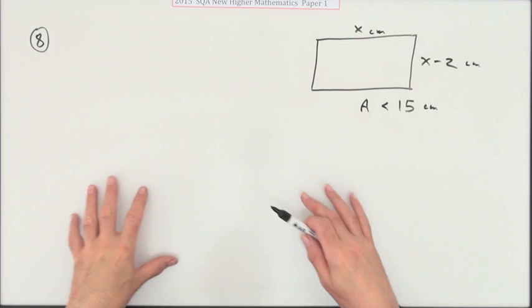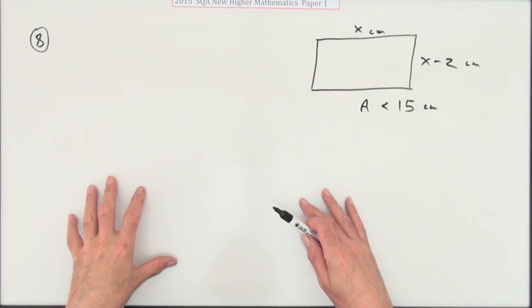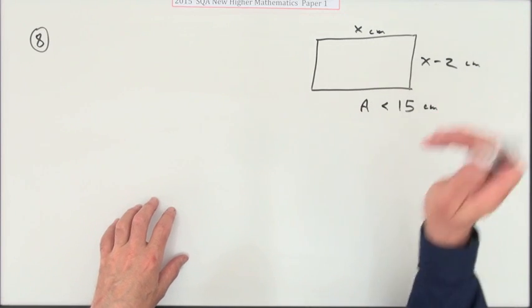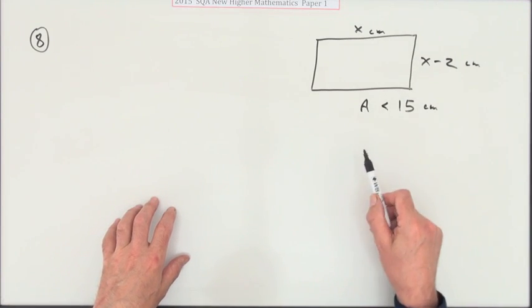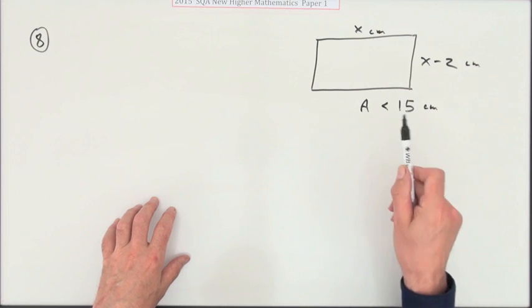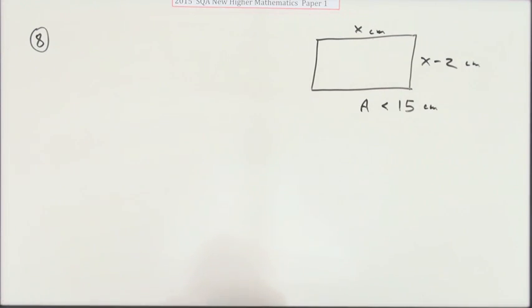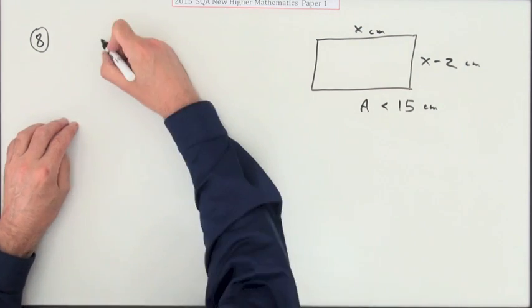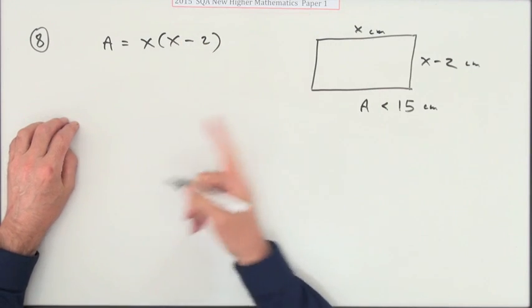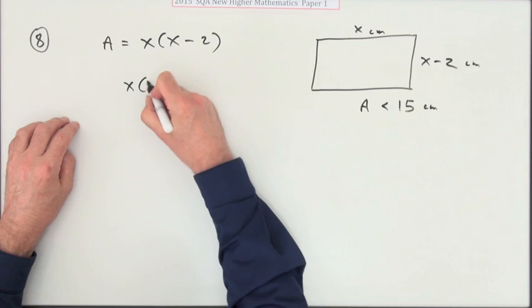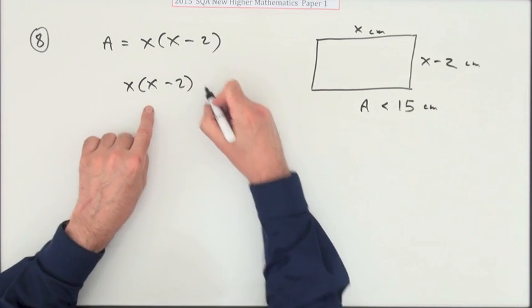Number 8 from paper 1 of the new higher 2015: you're given a rectangle with sides x and x minus 2, and it says the area has to be less than 15, so find the range of values of x. Well, the area of that rectangle is x times x minus 2, and that has to be less than 15.